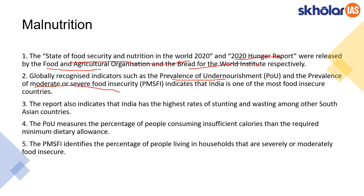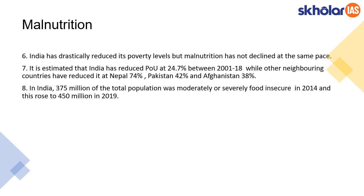There are two indicators used: Prevalence of Undernourishment (POU) and Prevalence of Moderate or Severe Food Insecurity (PMSFI). These two indicators show that India is one of the most food insecure countries, and the report also indicates that India has the highest rate of stunting and wasting among South Asian countries. POU measures the percentage of people consuming insufficient calories, and PMSFI indicates the percentage of people living in households that are severely or moderately food insecure. Remember these two indicators — they could be asked in prelims.